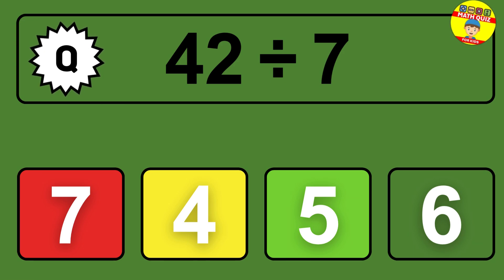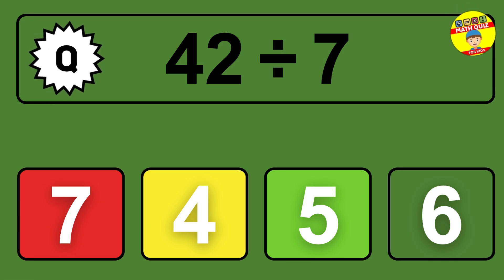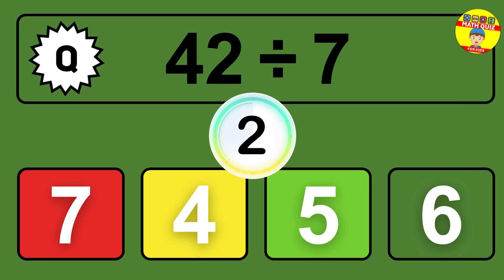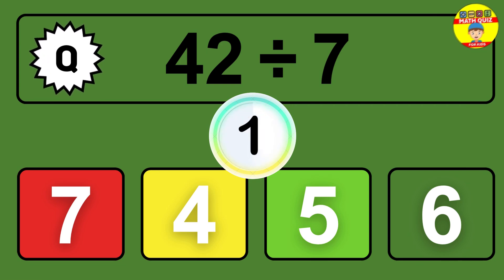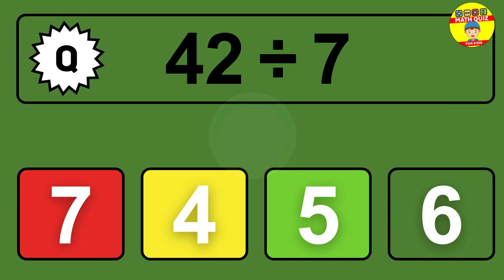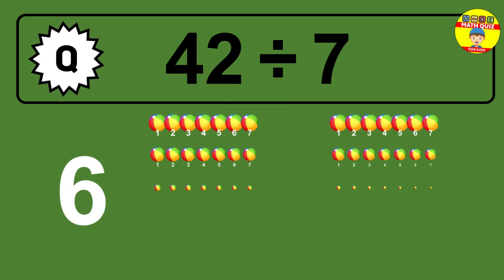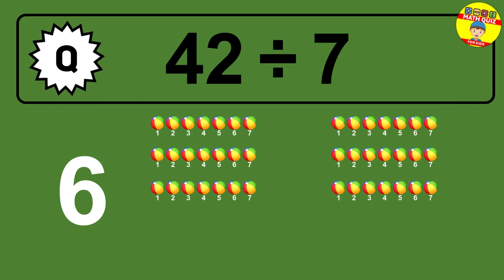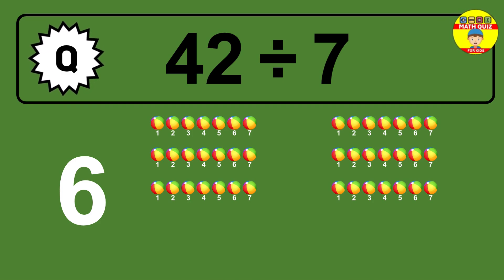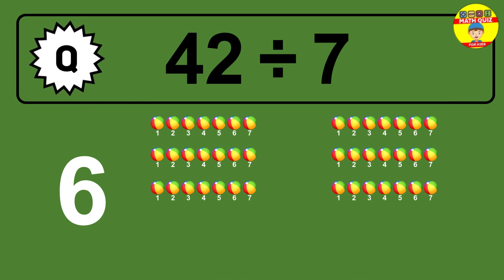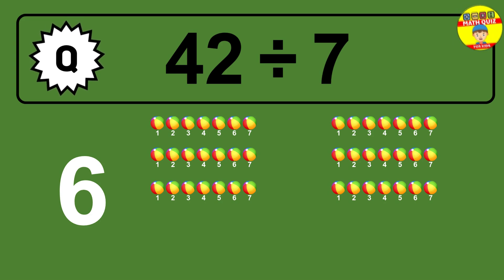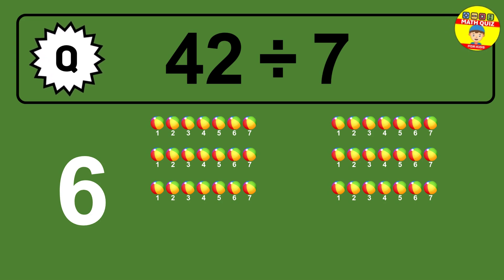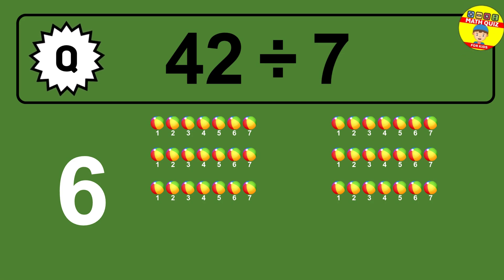42 divided by 7 — time to think. Let's go to the solution. Divide the number 42 by 7. Each group contains 7 units, so dividing 42 by 7 results in 6 equal groups. Thus, the result is 42 divided by 7 equals 6.